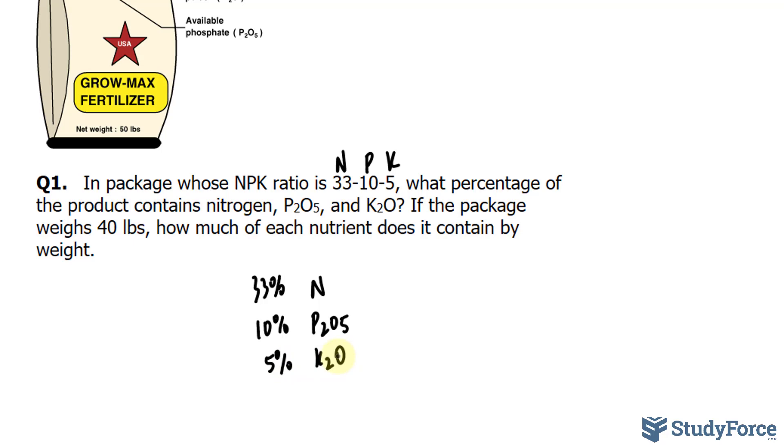The second part of the question is, if the fertilizer weighs 40 pounds, how much of each nutrient does it contain by weight? And for that, we'll use this special formula called B times R is equal to P, where P represents the portion, R represents the rate, which is this percentage, and B represents the base value, and in our case, it's 40 pounds.